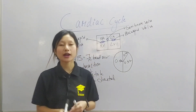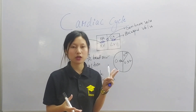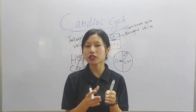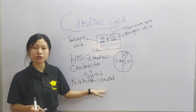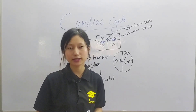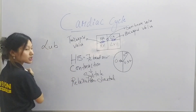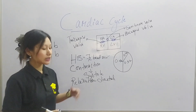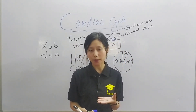The cardiac cycle is an event where the heart produces two sounds: lub and dub. This lub and dub occurs during the contraction and relaxation of the heart — during systole and diastole. The first heart sound is lub and the second is dub. Let's discuss how the heart produces these two sounds.